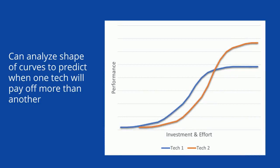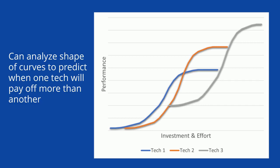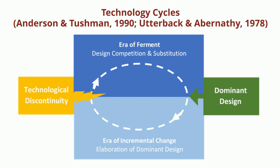We can analyze the shape of the curves to predict when one technology will pay off more than another. For example, in this graph, technology two has a steeper S-curve and in the long run will pay off more for each unit of effort. In this graph, technology three starts at a higher performance level than technology one or two. It's interesting to note that in most of the period, technology one and two will have higher payoff to effort, but at some point technology three will have higher payoff — it will create a discontinuity.